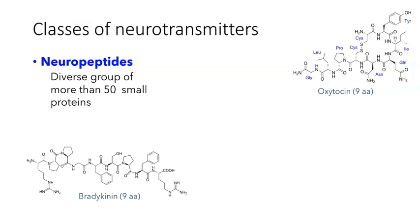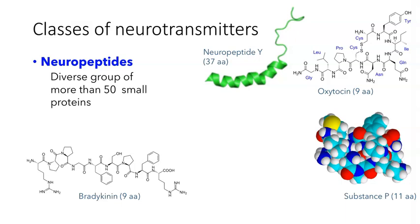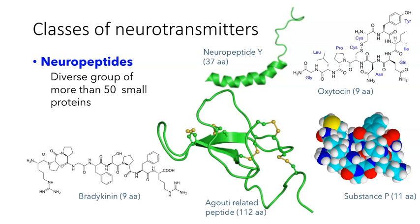These structures are a little misleading because small molecules like this tend to ball up and form globular shapes. We see this in substance P, another neuropeptide that is 11 amino acids long. Some peptide transmitters are a little larger and adopt shapes we see in other proteins. For example, neuropeptide Y, which is 37 amino acids long, has an alpha helix. And a GOODY-related peptide at 112 amino acids long shows beta pleated sheets.